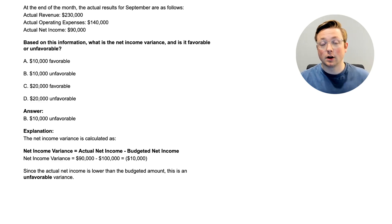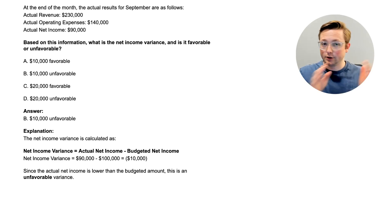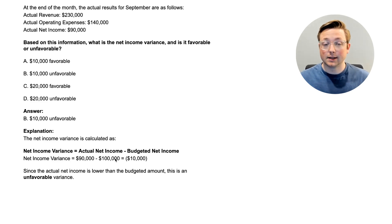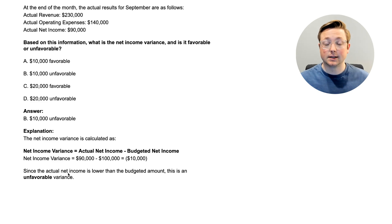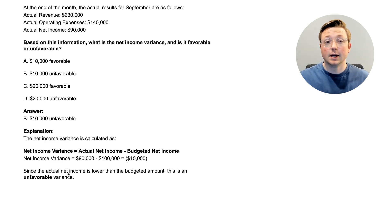The answer is B — a $10,000 unfavorable variance. The net income variance is calculated as actual net income less budgeted net income. You always compare actual to budget: take actual less budget and that gives you the variance. So $90,000 actual net income less $100,000 budgeted equals a $10,000 variance — meaning net income was $10,000 less than expected. Since this is income, receiving $10,000 less than expected is unfavorable. You just take actual versus budget, and depending on whether it's income or an expense, it will be favorable or unfavorable.